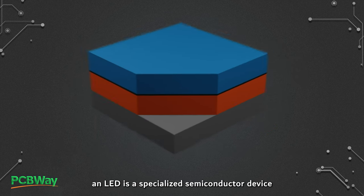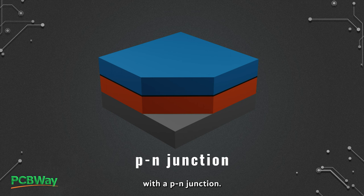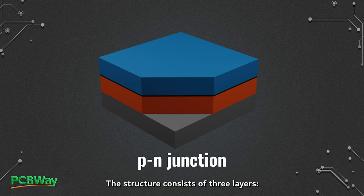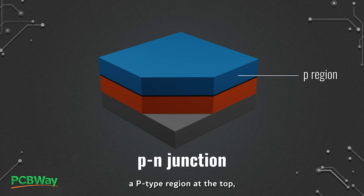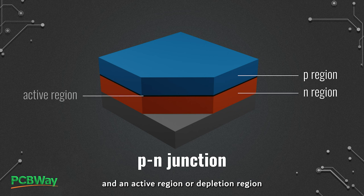Structurally, an LED is a specialized semiconductor device with a P-N junction. The structure consists of three layers: a P-type region at the top, an N region at the bottom, and an active region or depletion region in the middle.